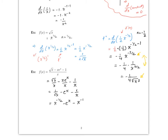We haven't talked about this yet, so note: the derivative with respect to x of e to the x is just e to the x. The power rule doesn't apply to this. The derivative of e to the x is just e to the x — technically this is the only function that is its own slope.